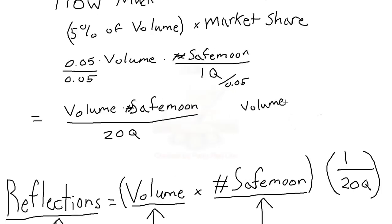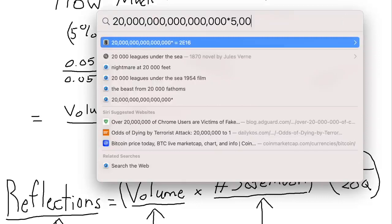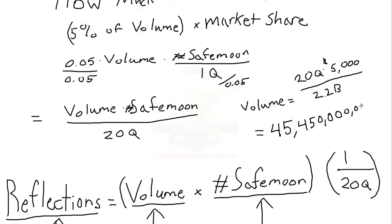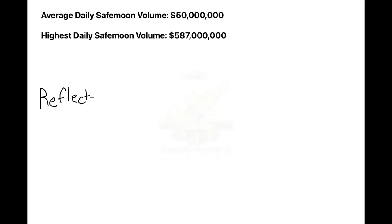To calculate, for instance, how much volume do I need to make x thousand dollars in reflections, just do some algebra. Isolate volume, substitute in however many thousand dollars you want for reflections, and solve for volume. We've said a lot. To recap, all this is good. We have our equations. Let's apply this to what we see day to day.